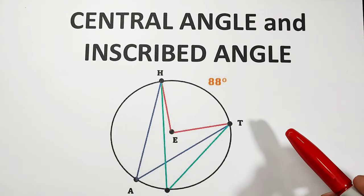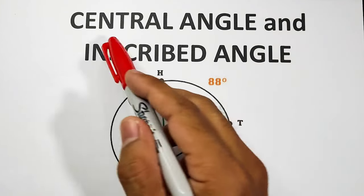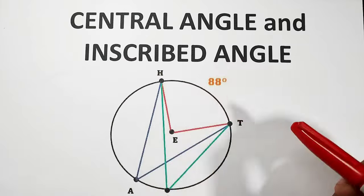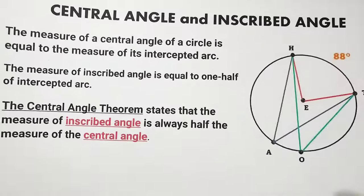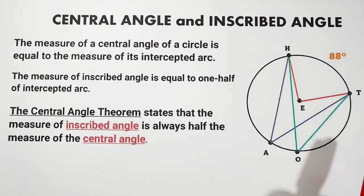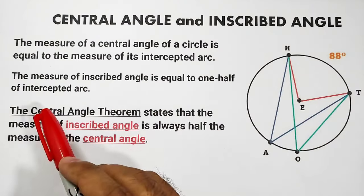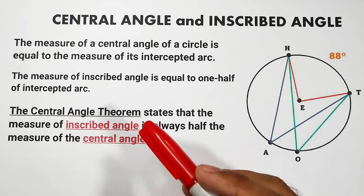Hello everyone. In this video we will talk about the measure of the central angle and inscribed angle. Based on the definition, the measure of a central angle is equal to the measure of its intercepted arc.